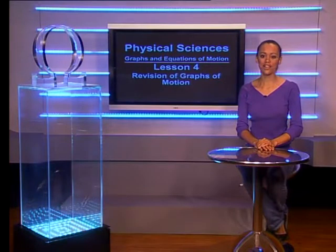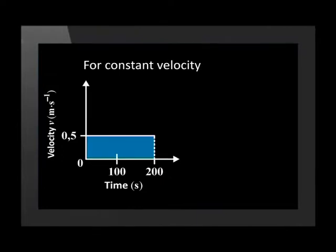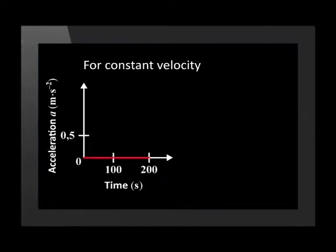Let us start with the constant velocity graphs. We have learnt that for constant velocity, the displacement-time graph is a straight line, and its gradient gives us the velocity. The velocity versus time graph for constant velocity is a horizontal straight line, and the area under the graph gives us the displacement at a specific time. Finally, for constant velocity, there is zero acceleration.